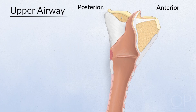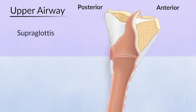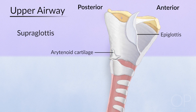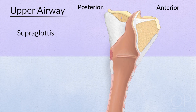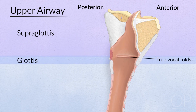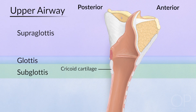The larynx itself is divided into three contiguous areas: the supraglottis, which includes the epiglottis, false vocal folds, and arytenoid cartilages; the glottis, which includes the true vocal folds themselves; and the subglottis, or region immediately below the true vocal folds.